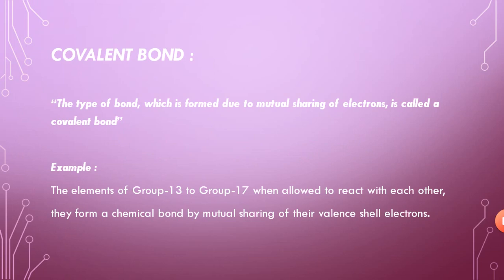How do atoms attach to each other through the sharing of electrons and the transfer of electrons? Today we are learning about the sharing of pairs from different atoms that make a bond between them, called the covalent bond. The type of bond which is formed by the mutual sharing of electrons is called the covalent bond.